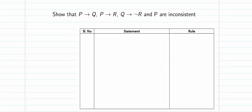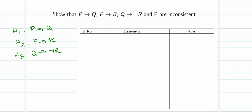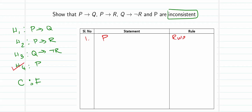Moving on to one more problem: show that if p then q, if p then r, if q then negation r, and p are inconsistent. The hypotheses are: h1 — if p then q, h2 — if p then r, h3 — if q then negation r, h4 — p. Since inconsistent means we need to derive false, that is our target conclusion.